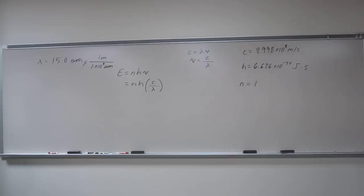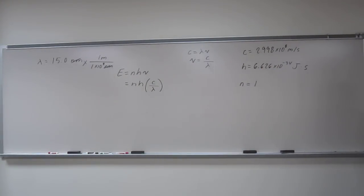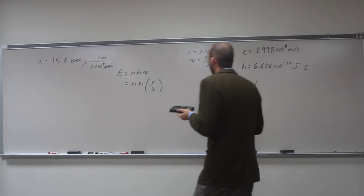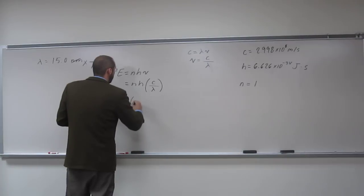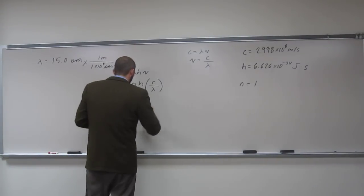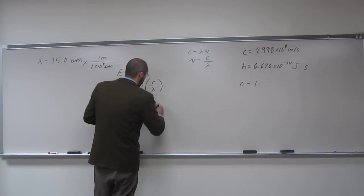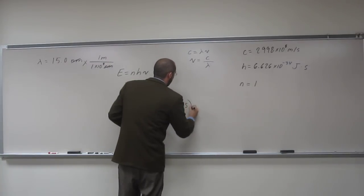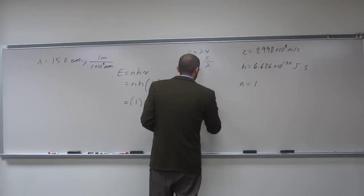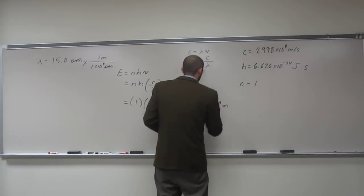So let's go ahead and plug all of that into the calculator and see what we get. n is 1. h, well, we don't have to convert it because joules is the energy unit we want, so h is 6.626 times 10 to the negative 34th joules seconds. And that's c, 2.998 times 10 to the 8 meters per second.